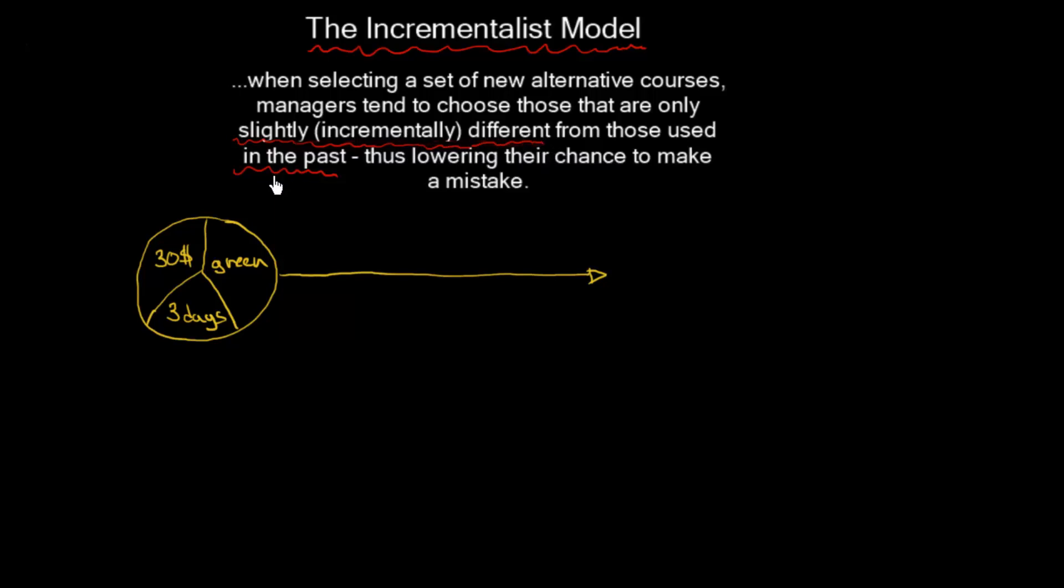We should look into the past and try to discover what has been successful. In the past, the most successful thing was when we lowered the price by $3. So we will focus on the price and just slightly change it so that the chance to make a mistake is very low.